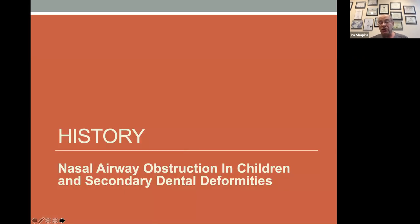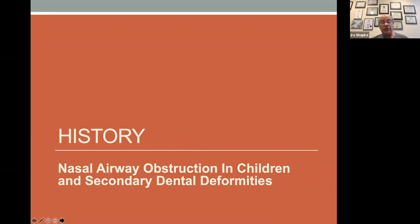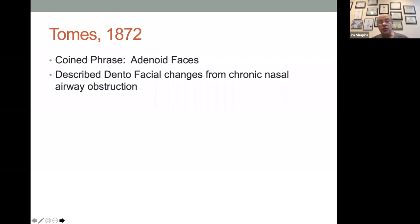I'm going to talk about the history of nasal obstruction in children because for over a hundred years we've been looking at these problems and it wasn't always agreed upon. As far back as 1872, Tomes coined the phrase 'adenoid facies' and described the facial changes of people who have chronic nasal obstruction. Chronic nasal obstruction is a huge problem because it changes our development.